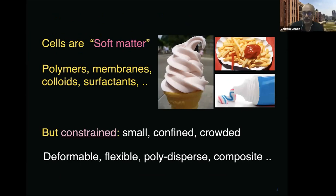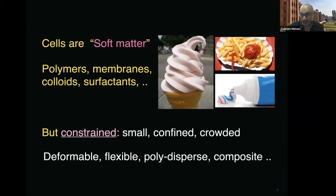What else do we need to know when thinking about biophysics? First, cells are very generically soft matter — we have the whole language of polymers, membranes, colloids, surfactants, etc. But this is soft matter subject to very specific constraints in biology: these are highly constrained soft matter systems. They're small, confined, and very crowded. Nevertheless, the same language of deformable, flexible, polydispersed composites applies, except we must worry about constraints that apply to anything actually living.